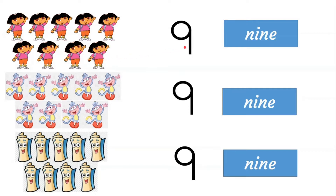9. How many monkeys are here? 1, 2, 3, 4, 5, 6, 7, 8, 9. 9.